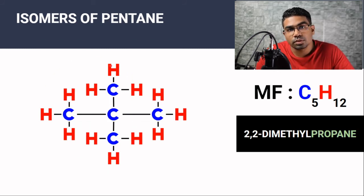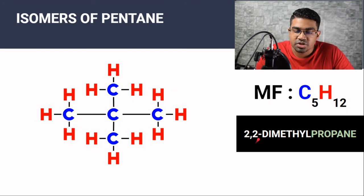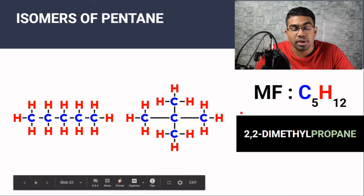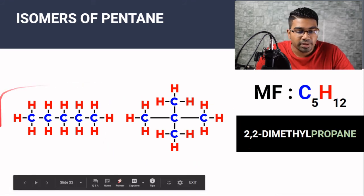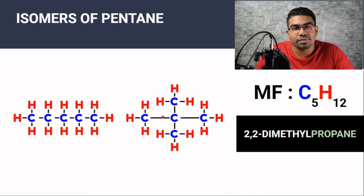Even though both branches are attached to the same carbon, we have to mention their position twice. Comparing 2,2-dimethylpropane to pentane, they have different structural formulas but the same molecular formula, and therefore they are isomers.